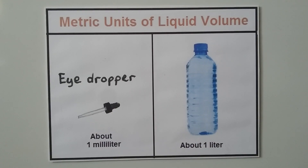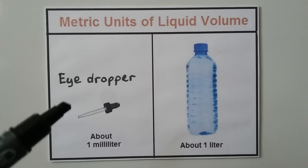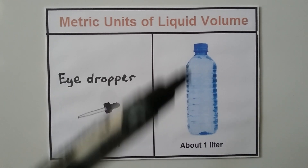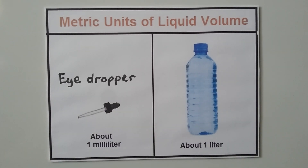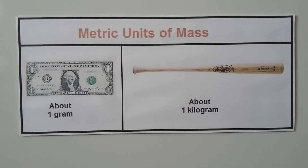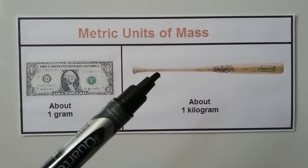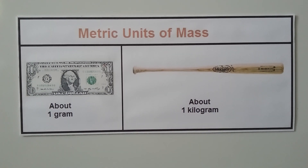For metric units of liquid volume, an eyedropper holds about 1 milliliter of liquid, and you've probably seen a liter of soda pop. For metric mass, a $1 bill has a metric mass of about 1 gram, and a baseball bat has a metric mass of about 1 kilogram.